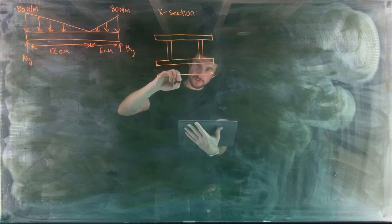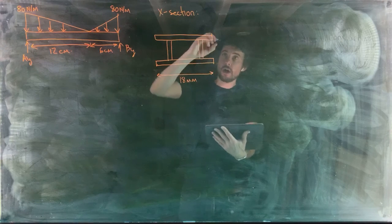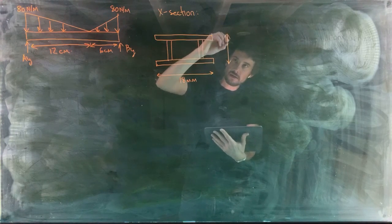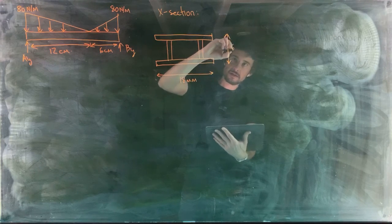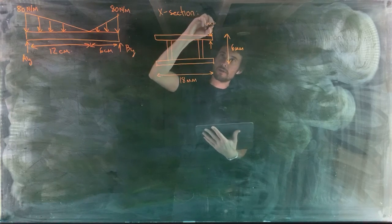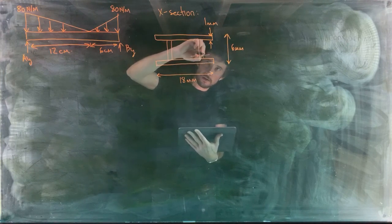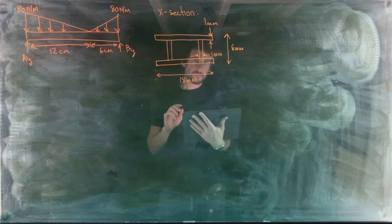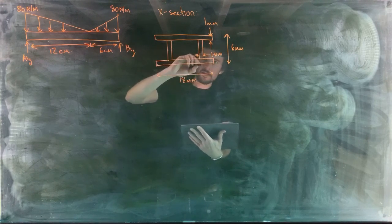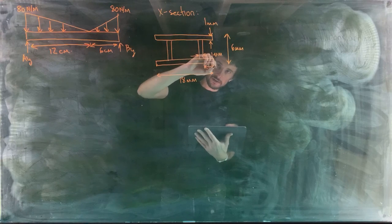The cross section is a small beam — overall width 18 mm, overall height 6 mm. The top and bottom sheet thickness is 1 mm each, and the vertical sides are set in 3 mm from each edge, also 1 mm thick.